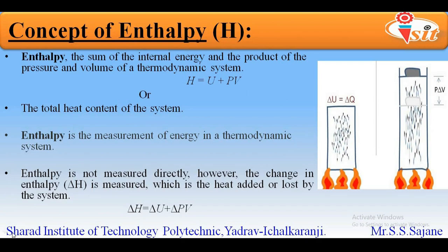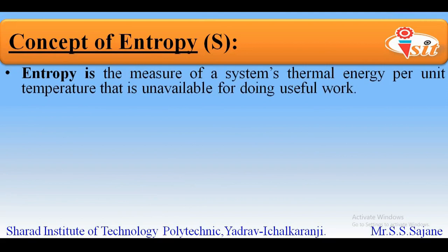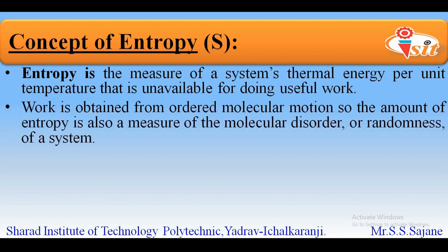Today we will also see the concept of entropy. Entropy is denoted by the letter S. It is defined as: entropy is the measure of a system's thermal energy per unit temperature that is unavailable for doing useful work. In simple words, entropy is nothing but the energy that is wasted. We also know that work is obtained from ordered molecular motion. So the amount of entropy is a measure of molecular disorder or randomness of a system.